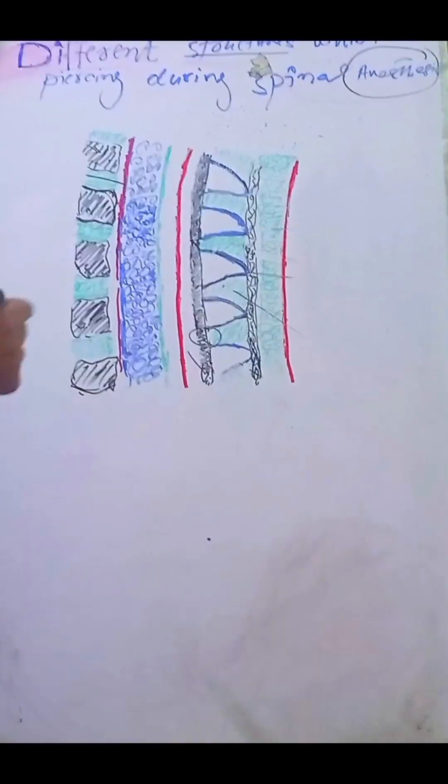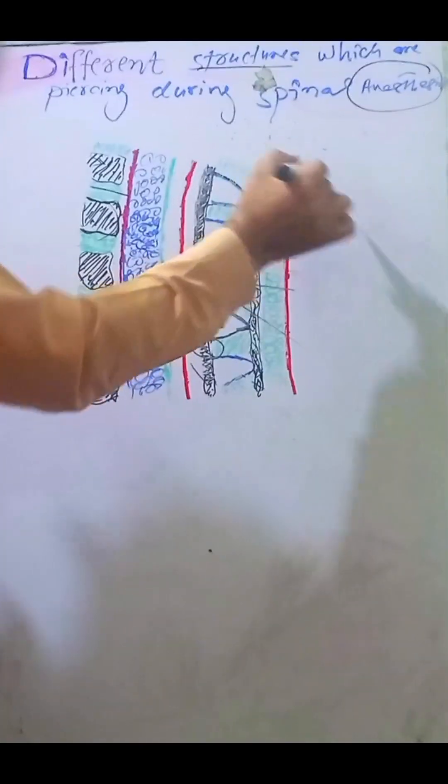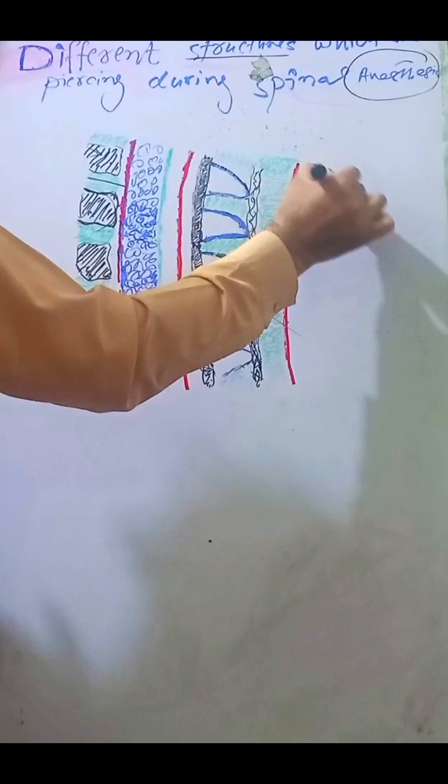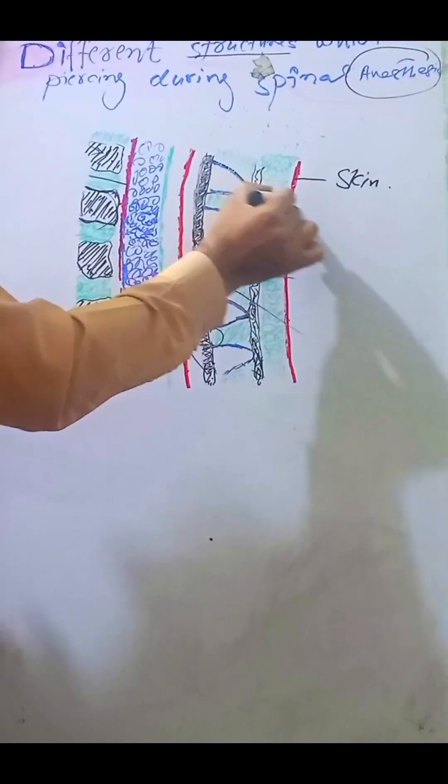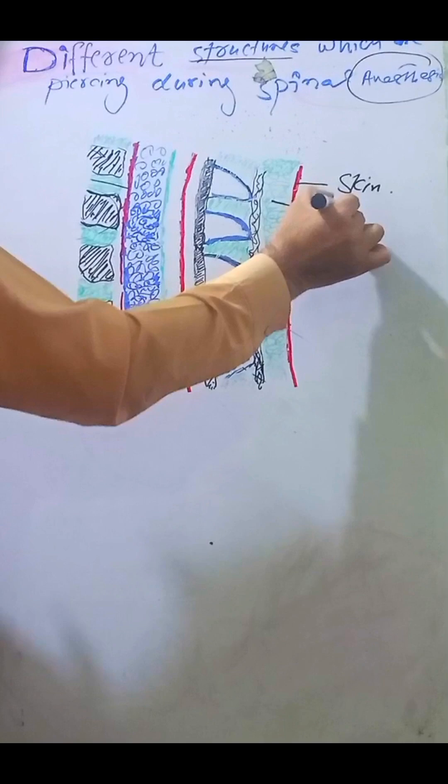I have drawn a diagram that you can see. Let's start. The first structure which we can pierce is the skin. The second one is subcutaneous tissues.